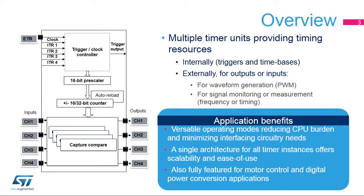This slide describes the input capture features. Each channel can be individually configured as input capture with a number of signal conditioning options. An input can be mapped on two capture channels, typically to differentiate rising edge from falling edge capture. The edge sensitivity is programmable and can be rising edge, falling edge, or both edges. An event prescaler allows capture of one event every two, four, or eight events.